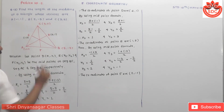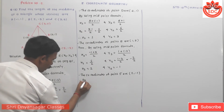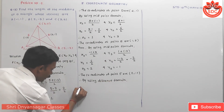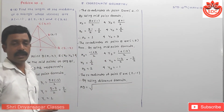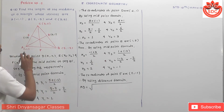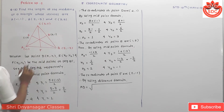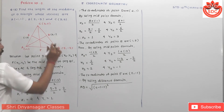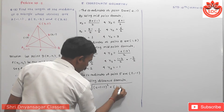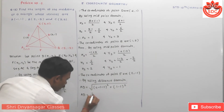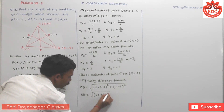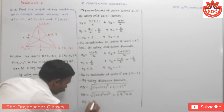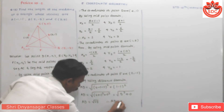Now we have to find the length of the median. By using the distance formula, length of median AD: A is (x1, y1) = (-1, 1) and D is (x2, y2) = (4, 1). So AD = √[(4 - (-1))² + (1 - 1)²] = √[(5)² + 0²] = √25. Therefore AD = 5 units.